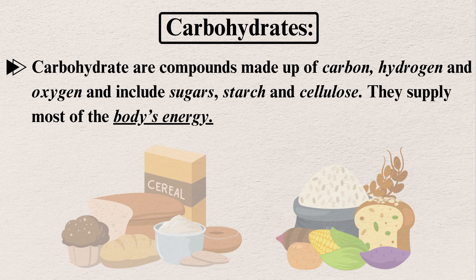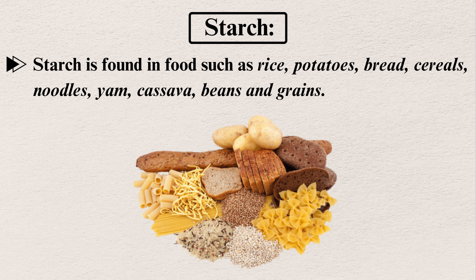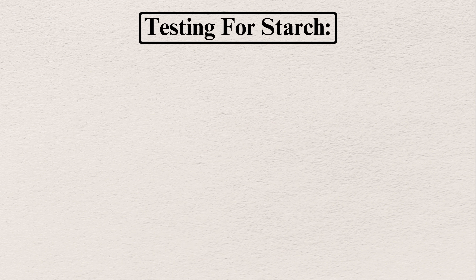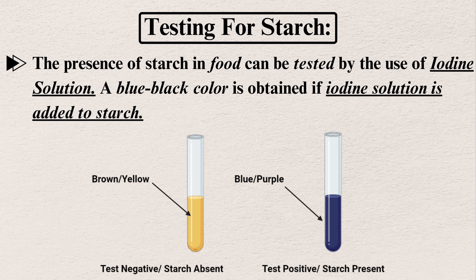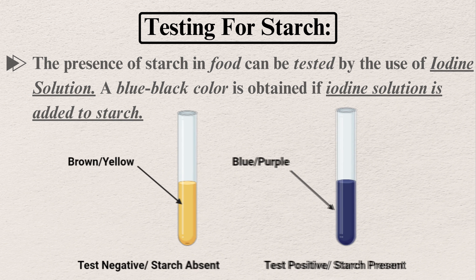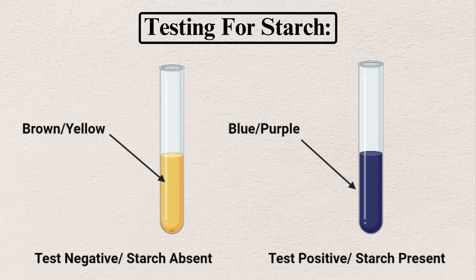Carbohydrates are compounds made up of carbon, hydrogen, and oxygen, and include sugars, starch, and cellulose. They supply most of the body's energy. Starch is found in foods such as rice, potatoes, bread, cereals, noodles, cassava, beans, and grains. The presence of starch in food can be tested by the use of iodine solution — a blue-black color is obtained if iodine solution is added to a starch sample.